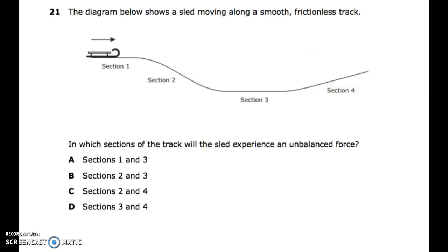Number twenty-one: the diagram below shows a sled moving along a smooth, frictionless track. In which section of the track will the sled experience an unbalanced force? Section 1 and 3, sections 2 and 3, sections 2 and 4, sections 3 and 4.